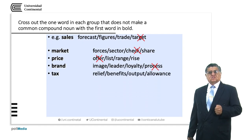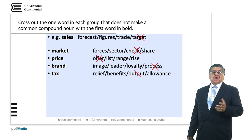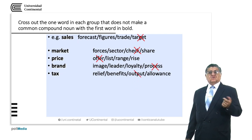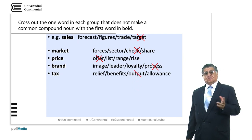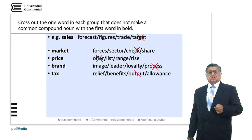Tax: 'tax relief', 'tax benefits', 'tax allowance' are valid. 'Tax output' does not work with 'tax'.